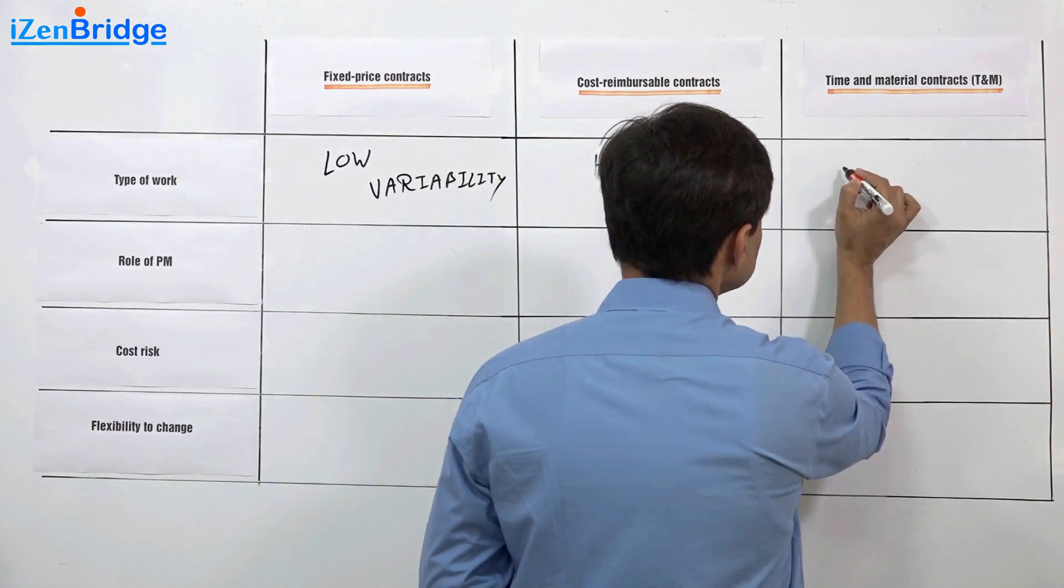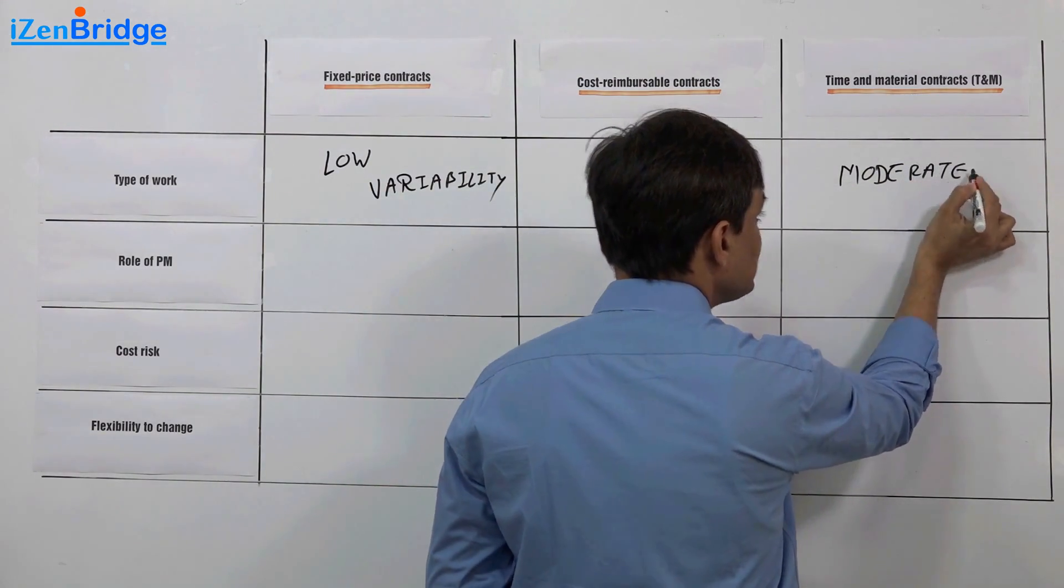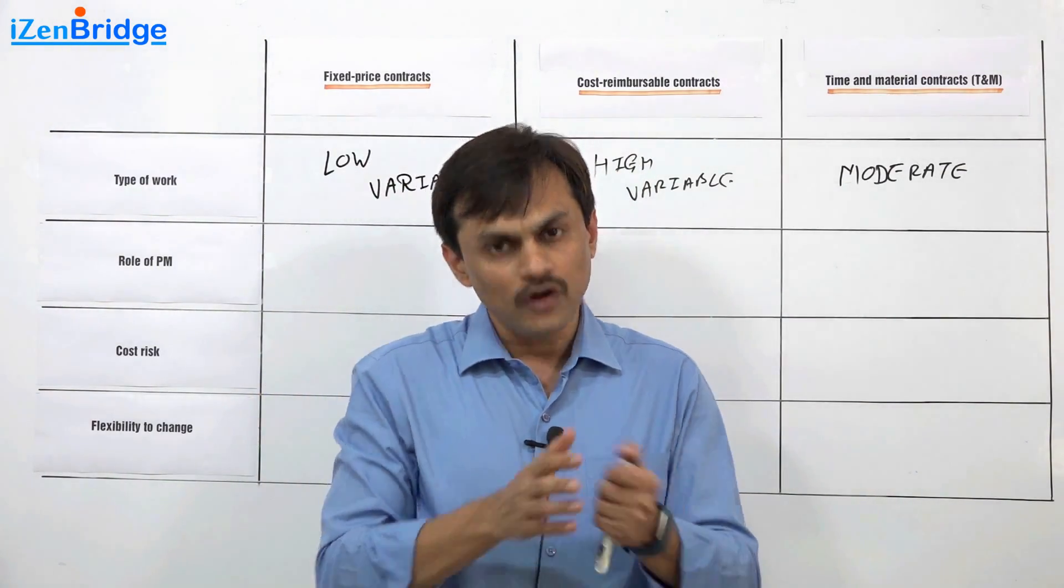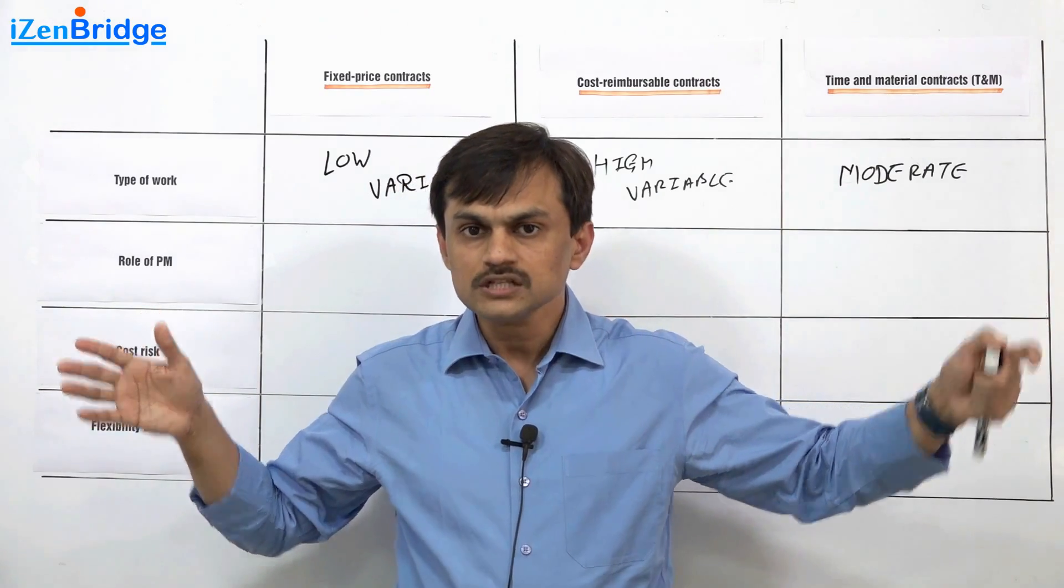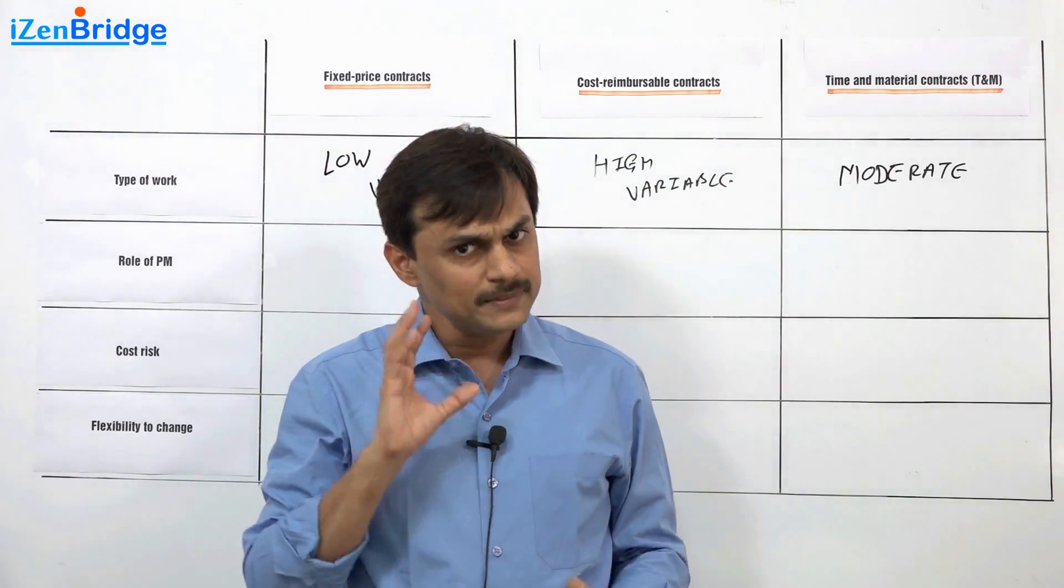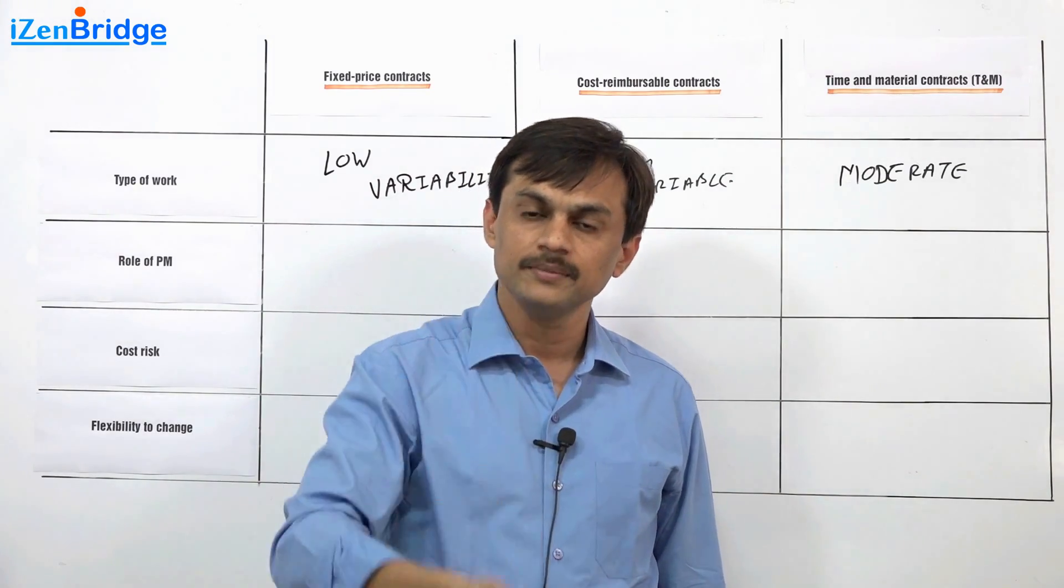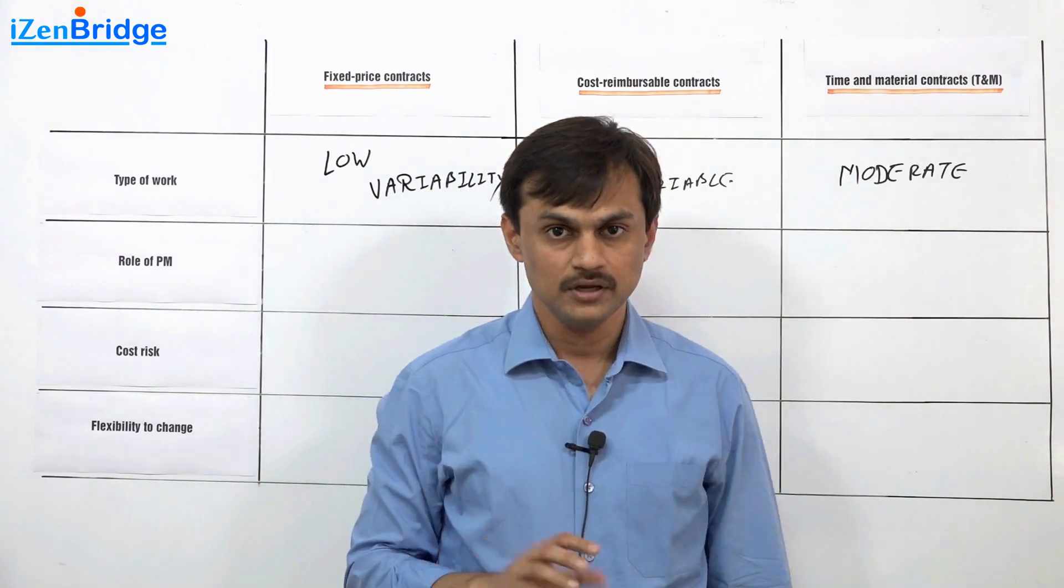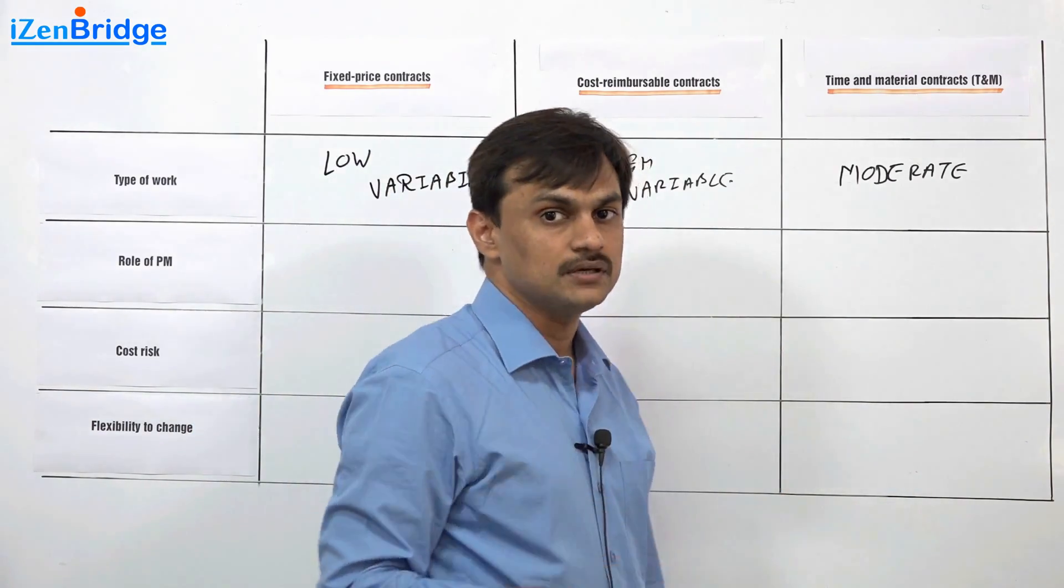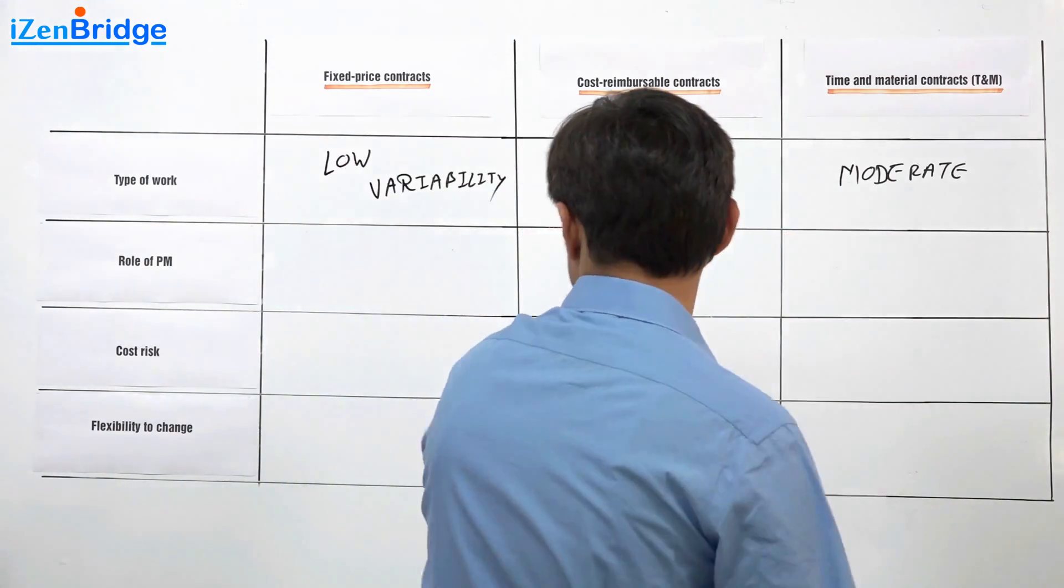And in case of time and material, I would say moderate variability. You do have a certainty of the type of material and type of time and type of resources needed, but you do not have predictability of how much time it will need. So you know that there are ten workers I want to hire. I may need it for one month, I may need it for two months, but I am clear that this is the type of skill I need and these guys can do that work. So why can't I have an agreement on hourly, monthly rate of these people. You do have a variability but it is a moderate variability. At least the process, material, people are pretty much predictable.